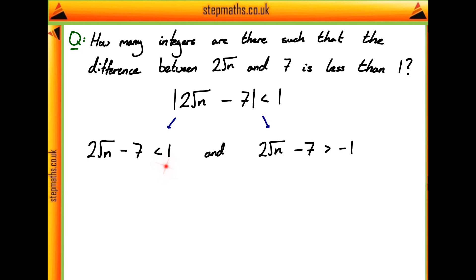We can add 7 to both sides of this left-hand inequality here to get 2 root n is less than 8. Then dividing by 2, we get that root n is less than 4, or that n is going to be less than 16.